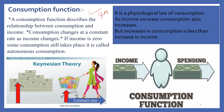This consumption function is also known as the psychological law of consumption, also called the Keynesian consumption function. This consumption function was given by Lord J.M. Keynes. What he says with the help of consumption is: as income increases, consumption also increases. But the increase in consumption is less than the increase in income. Increase in income is more compared to increase in consumption.